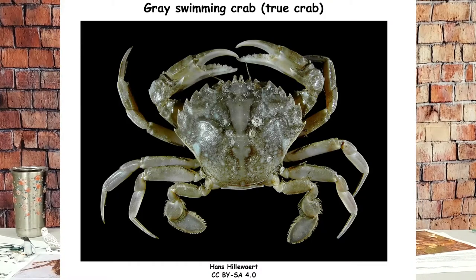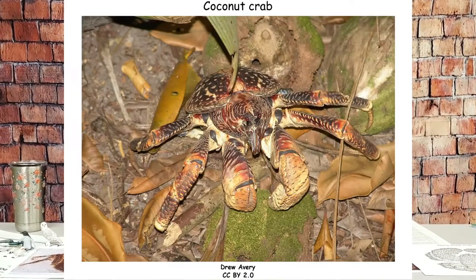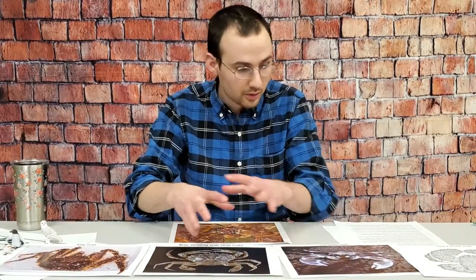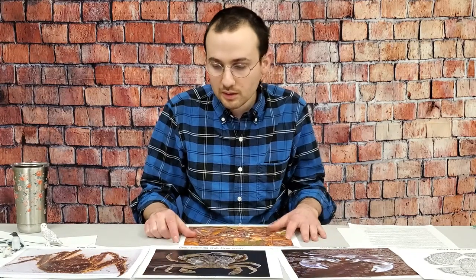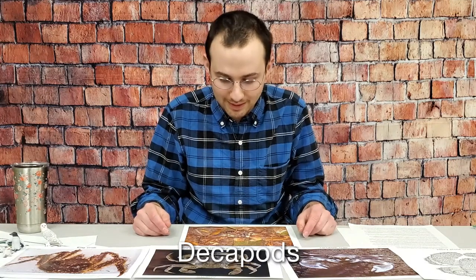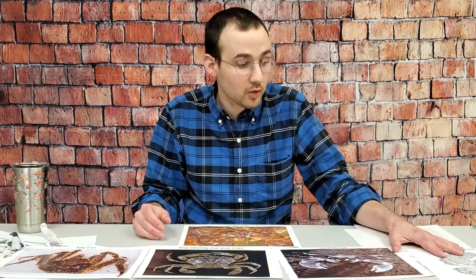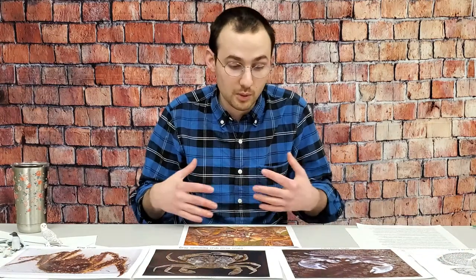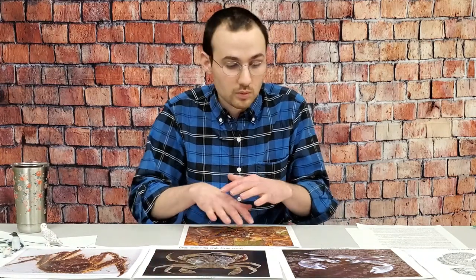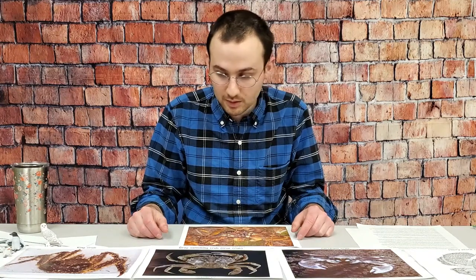Probably the biggest example of analogy in nature is called carcinization, which comes from the Latin name for crabs. If we look at all these different crabs — a king crab, a gray swimming crab, a porcelain crab, a hairy stone crab, and a coconut crab — they all look really similar: the same circular squat body with legs coming out and big claws in front. They're all related as decapods, meaning they have ten feet, but they evolved their crab-like characteristics separately. They live on the bottom of the ocean, and this body shape is just really good at surviving in that environment, so they all developed the same characteristics over time, even though they're not closely related.